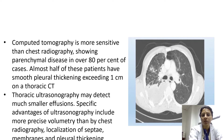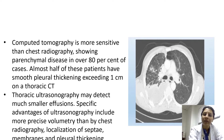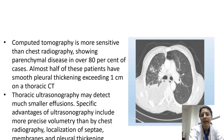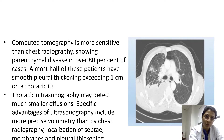Thoracic ultrasonography may detect much smaller effusions. Its advantages include more precise volumetry than chest radiography and help in localization of septations — which can be seen floating or adhered to the pleural space — as well as membranes and pleural thickness.